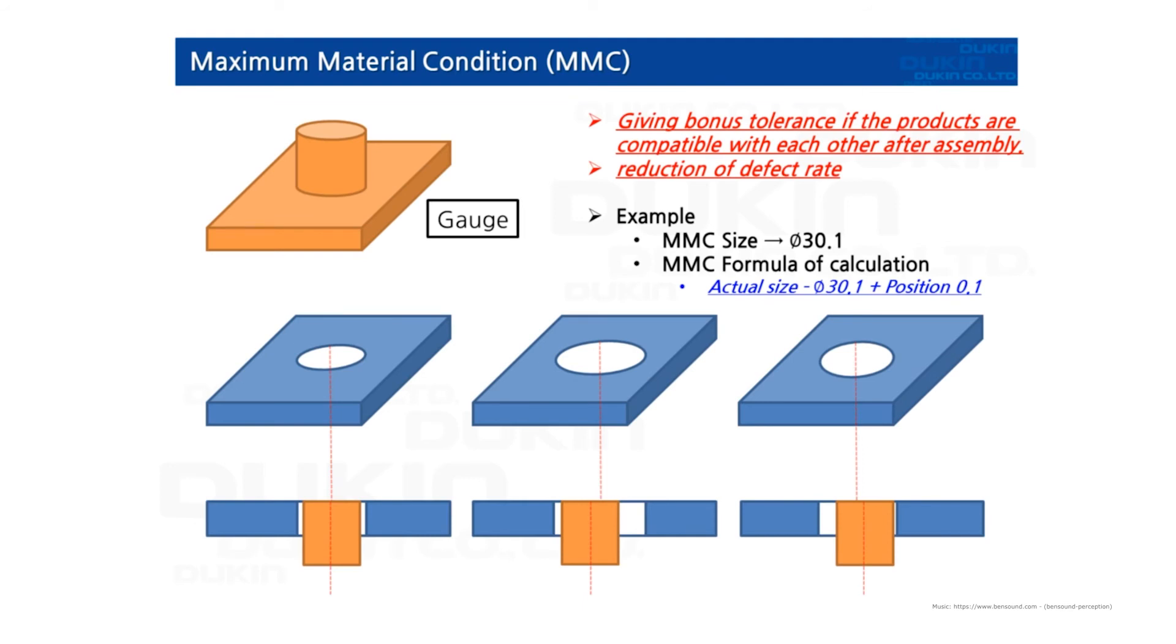So according to the previous practice, there are three parts manufactured. And then the first one, we measured the diameter. It was 30.1. So therefore position tolerance will be only 0.1 applied.